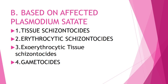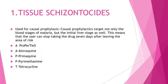Based on the affected Plasmodium stage, there are four classes: tissue schizontocytes, erythrocytic schizontocytes, exo-erythrocytic schizontocytes, and gametocytes. The first — tissue schizontocytes — is used for causal prophylaxis. Causal prophylaxis means it does not target only the bloodstream but also the initial liver stage.